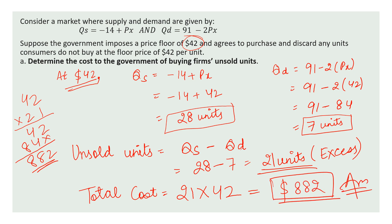This is your answer. We checked the price floor at $42 — the quantity firms are selling is 28, demand is 7, the gap is 21 units that consumers are not buying. The government buys these 21 units at $42 per unit. Total cost to government = 21 × 42 = $882.